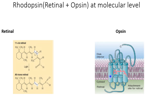When light falls on the retinal, it converts from 11-cis retinal to all-trans retinal — the simpler, straight-chain form. This change in retinal conformation inside the opsin causes isomerization of the GPCR or opsin molecule, which brings conformational changes in opsin.